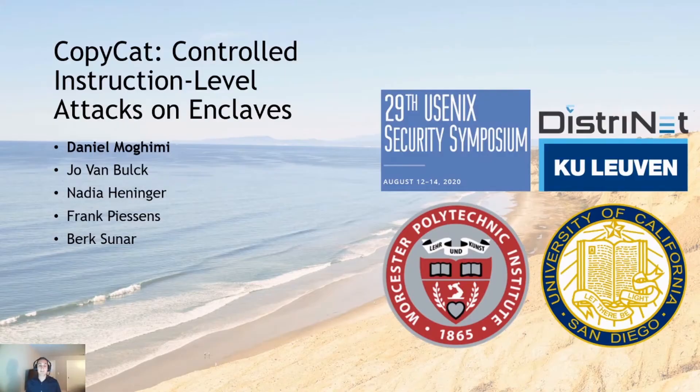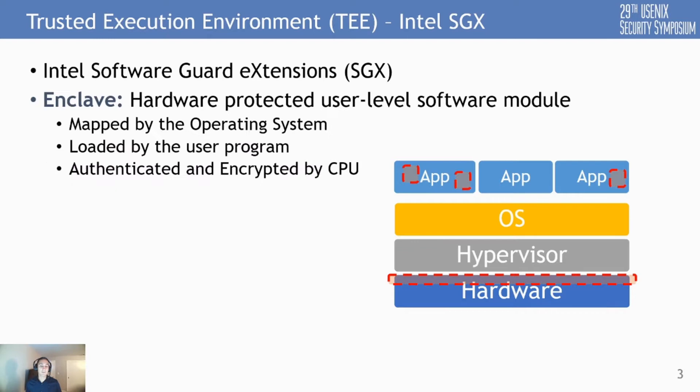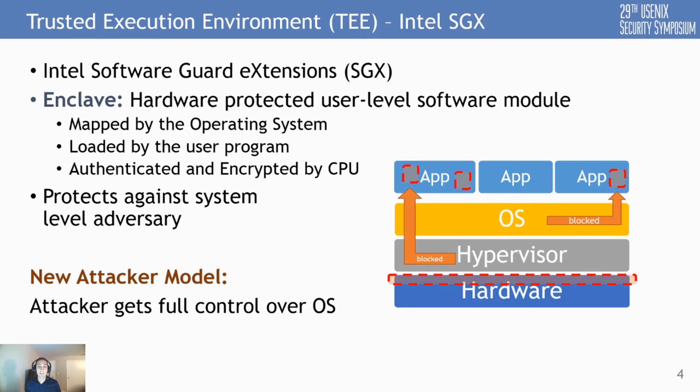In a traditional security model in the cloud or other multi-tenant environments, we assume that the hardware and system software are trusted. Now with Trusted Execution Environments, this model has changed. In Intel SGX, the system software and almost anything outside of the CPU die is considered malicious, and the CPU provides protection for security-specific modules called enclaves. These enclaves are mapped by the OS and loaded by the user space application, but even OS adversaries are not supposed to read or modify the data inside the enclave.